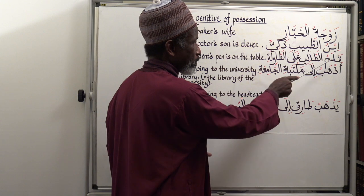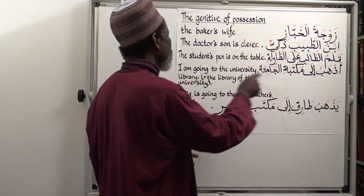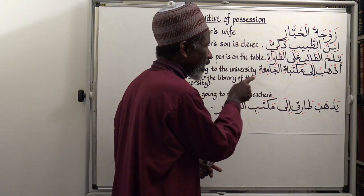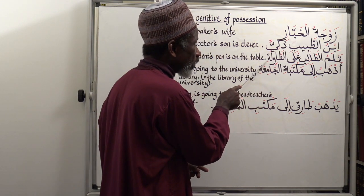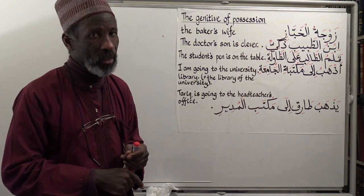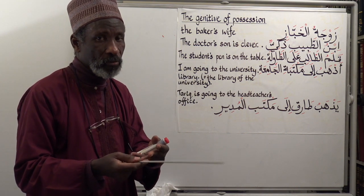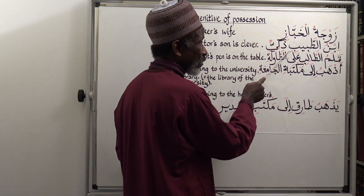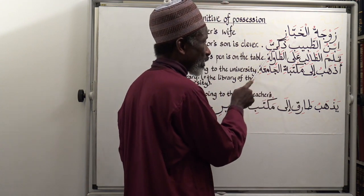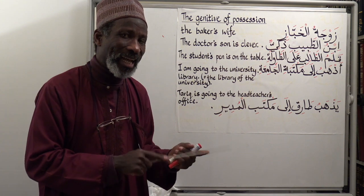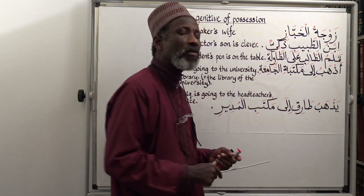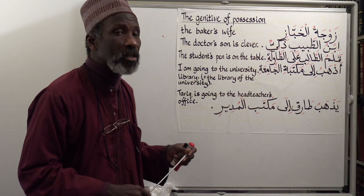Now this preposition 'ala' also imposes kasra on the noun after it as well. That's genitive — genitive by means of the preposition 'ala' or 'fi.' Qalam at-talibi ala at-tawilati — here it is kasra because of the preposition, but talibi is kasra because of the idhafa construction, or genitive of possession. Next: Adhabu ila maktabati — I am going to the library. Maktabati here is kasra because of 'ila,' which is your preposition forcing this to be kasra.